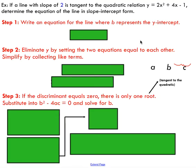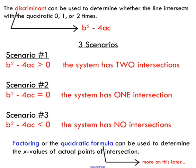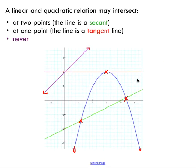Here's a more challenging problem you might see on a test. We're given a slope of two and told that the line with that slope is tangent to a given quadratic relation. We need to determine the equation of that line. Tangent means the line touches the quadratic at exactly one point, so our discriminant must equal zero — because there is only one point of intersection.